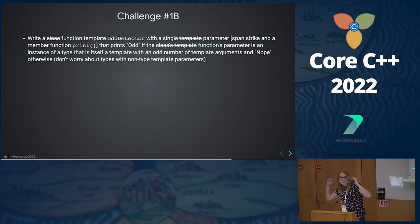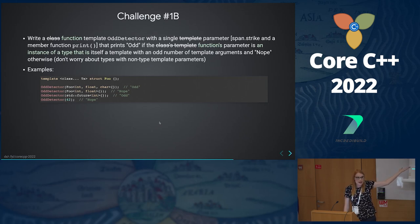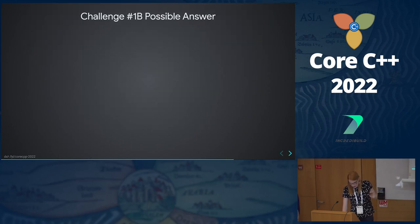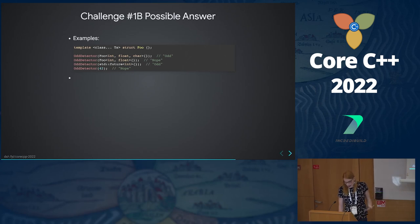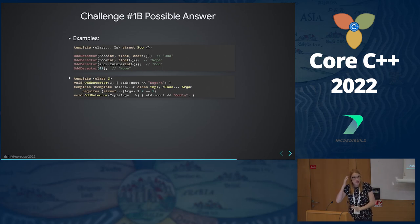Overloading is very similar to partial specialization, so we're basically going to do the same challenge but with functions instead of a class template. OddDetector is now a function. Here's the unconstrained overload — the analog of the primary template. The difference is that with functions you don't have to have an unconstrained overload, whereas with templates you do need a primary template. Here we have an unconstrained overload that prints 'nope' and the same constraint — pattern matching in exactly the same way.